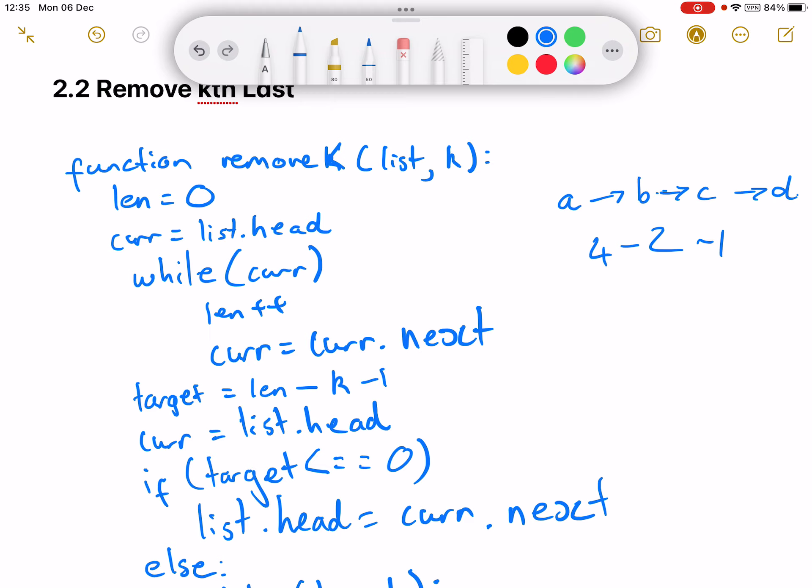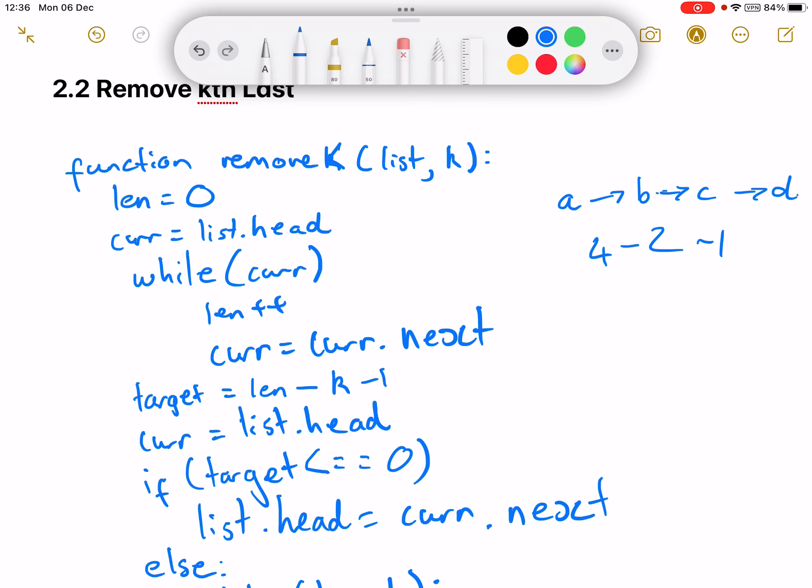We went to chapter two last time a while ago. I failed this 2.1 but I managed to succeed this time around. So we're looking at 2.2 which was to remove the kth last element.